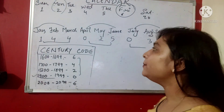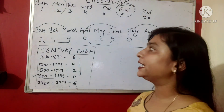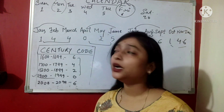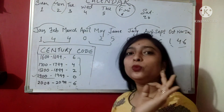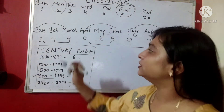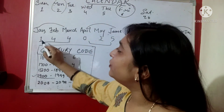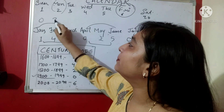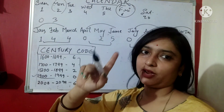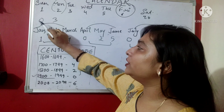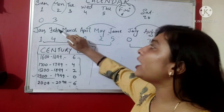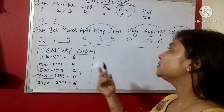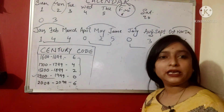Before proceeding, one important thing: the month codes given are for normal years. For a leap year, we reduce the codes for January and February by one each. So in a leap year, January's code becomes 0 and February's code becomes 3.